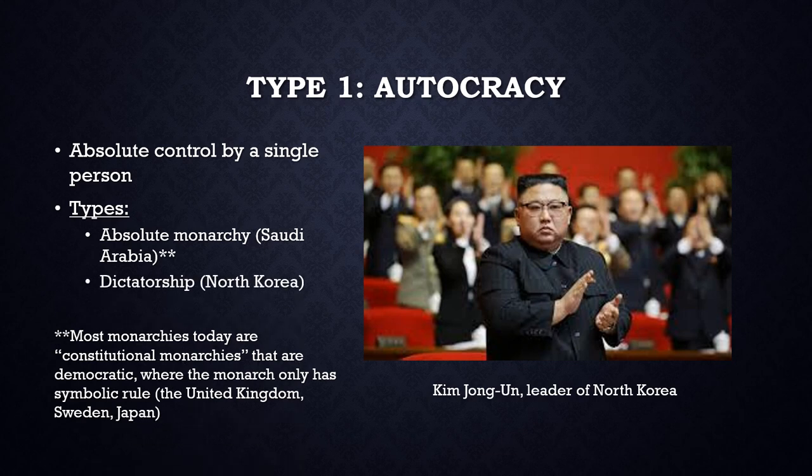The other type of autocracy is a dictatorship. Here, the ruler holds power by force and is not a member of a royal family. For example, Kim Jong-un of North Korea is a dictator who holds power by dominating the military and other government institutions. Although he did succeed his father, the original North Korean dictator Kim Jong-il, the Kims are not a royal family, and instead derive their legitimacy through manipulation of the country's constitution and forceful domination of other politicians and the institutions of government, such as the military, law enforcement, and the court system.